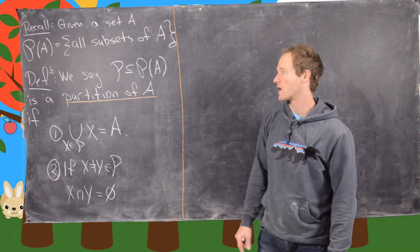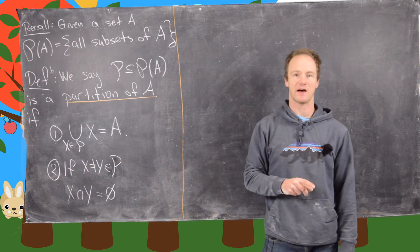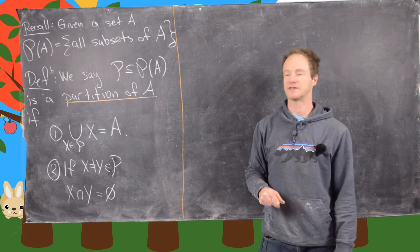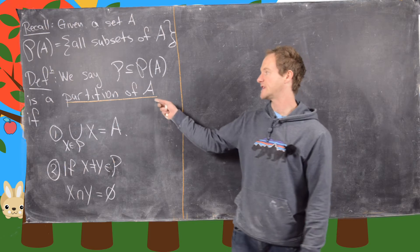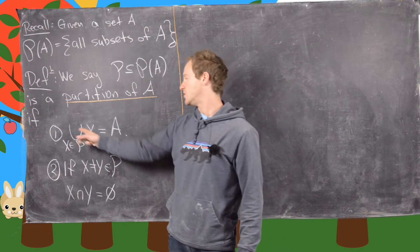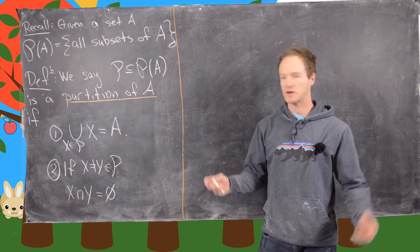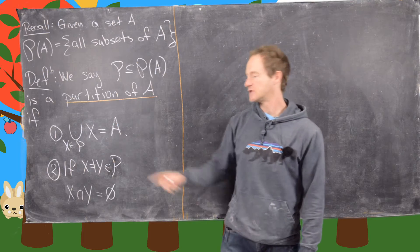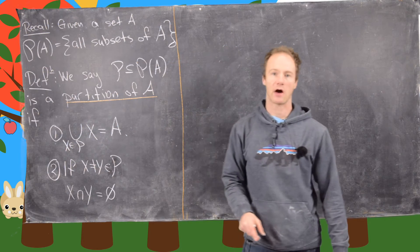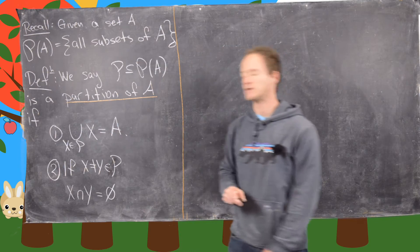For our definition, we'll say that P, which is a subset of the power set — so P contains some of the subsets of A — is a partition of A if the union of all of the subsets in this partition equals the whole set. I'll denote this as the union over all X in P of X equals A.